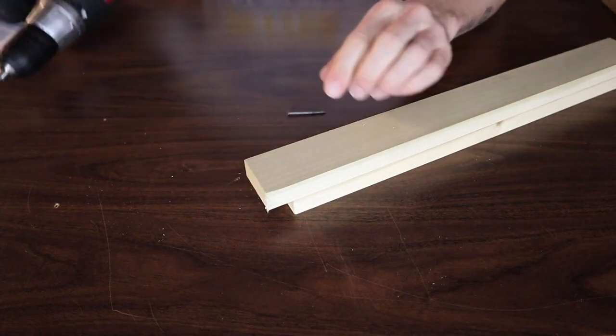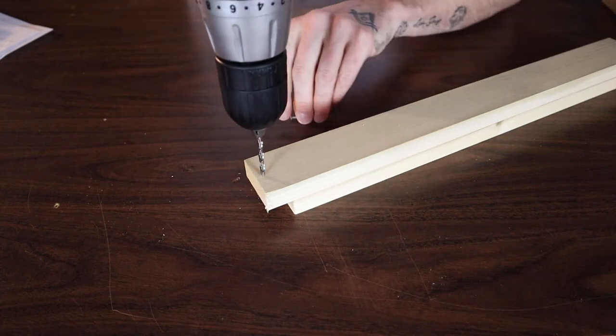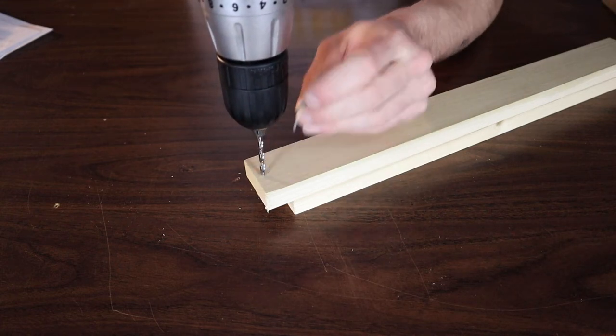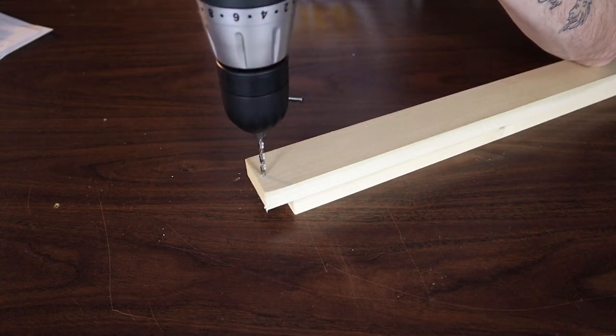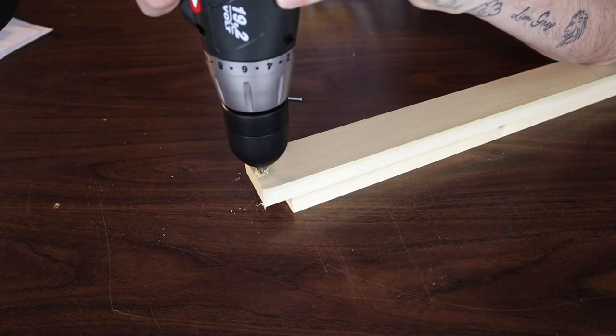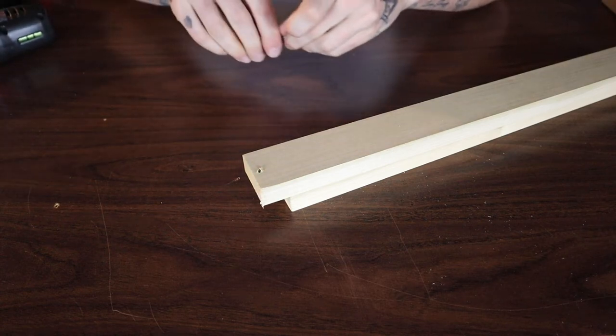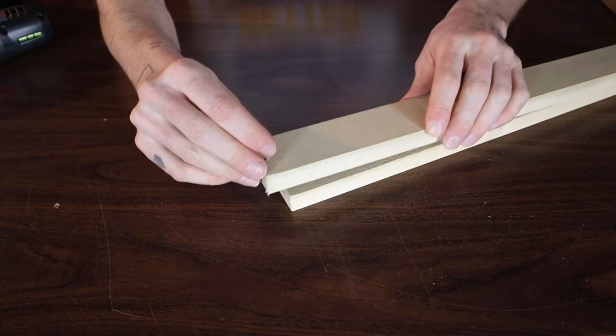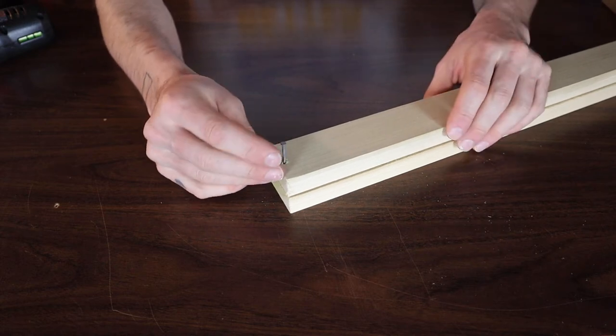One thing you can do to avoid that is pre-drill your hole. Get a drill bit that's similar to the size of the nail, maybe slightly smaller, and just pre-drill a hole. That's going to allow the nail to slip through the first piece of wood and then nail into whatever you're nailing into underneath, and that way it's not going to split.